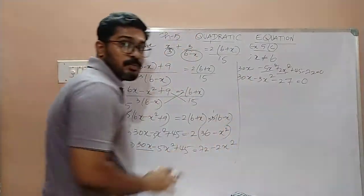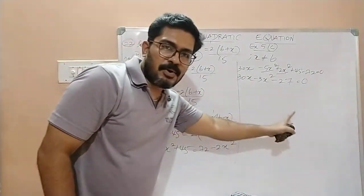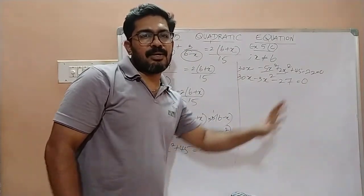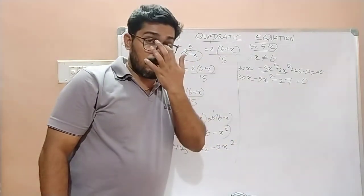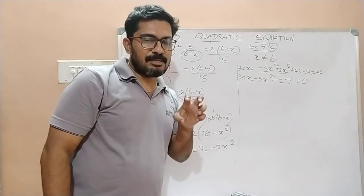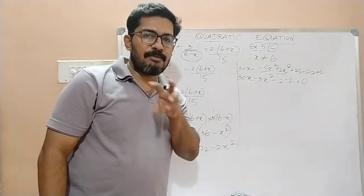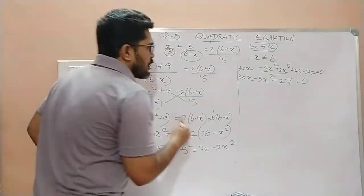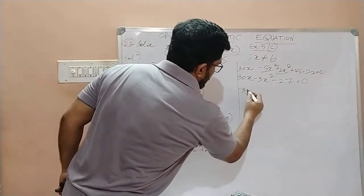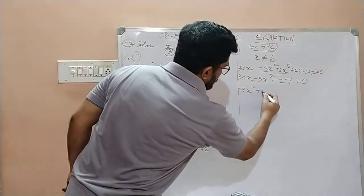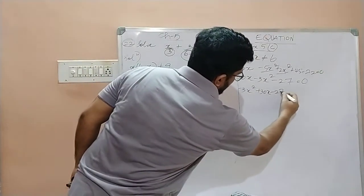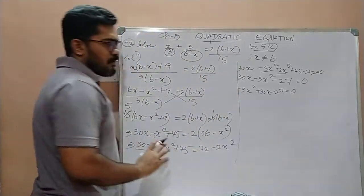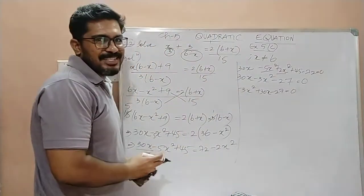Children, are we getting a quadratic equation? Yes, we are getting a quadratic equation, but just that it is not in a proper order. Because, in a quadratic equation, we always place the term having x square first. So, let us do that also. Here, I get minus 3x square plus 30x minus 27 which is equal to 0. Now, I can say that it is a proper quadratic equation.